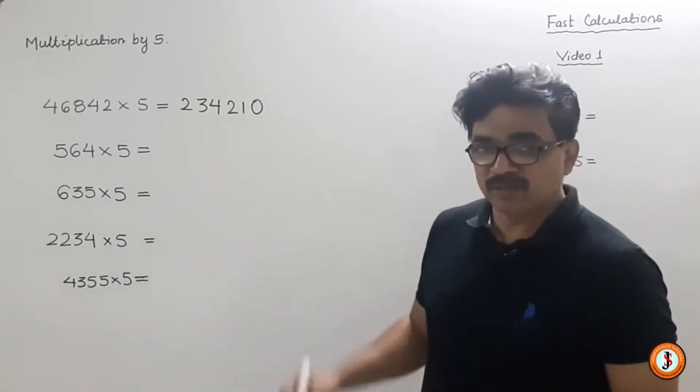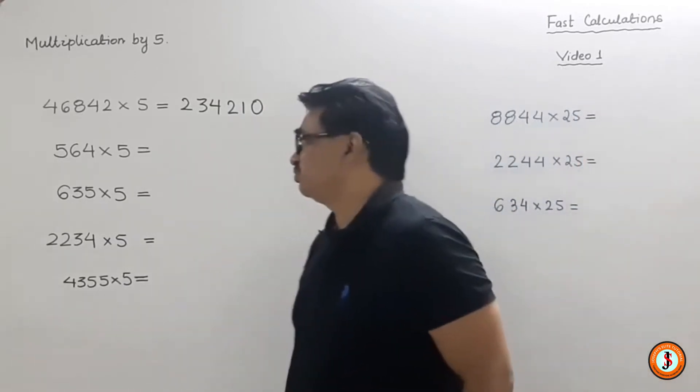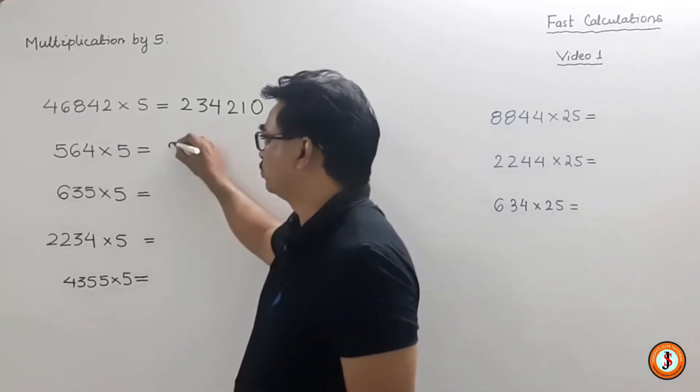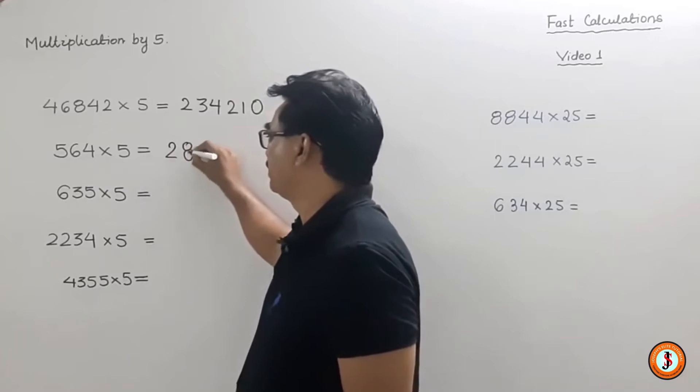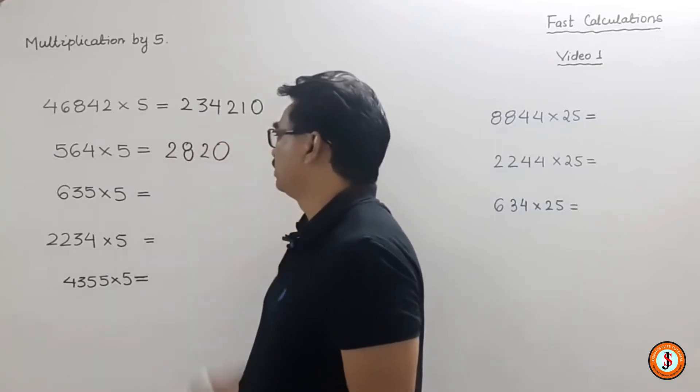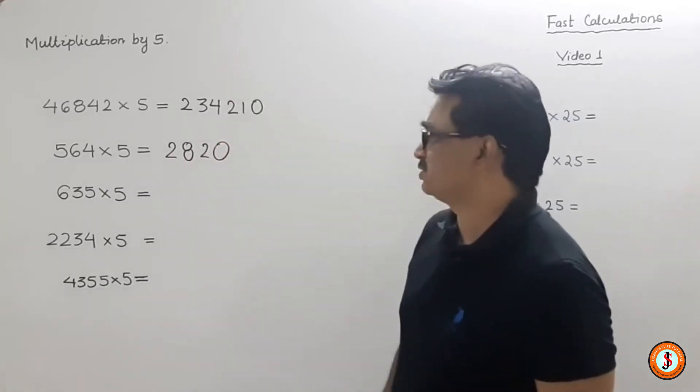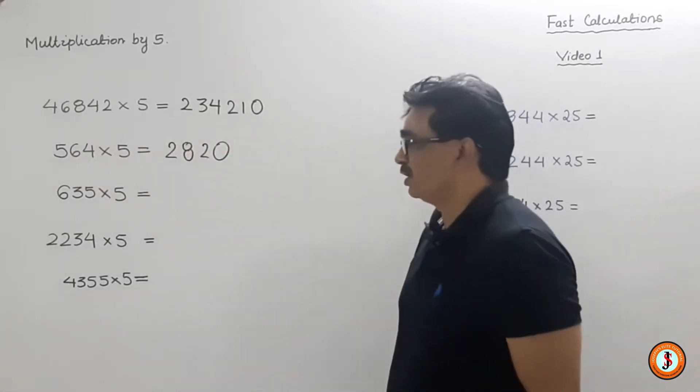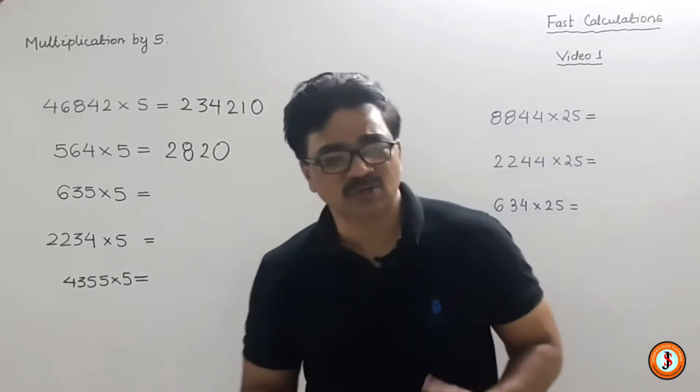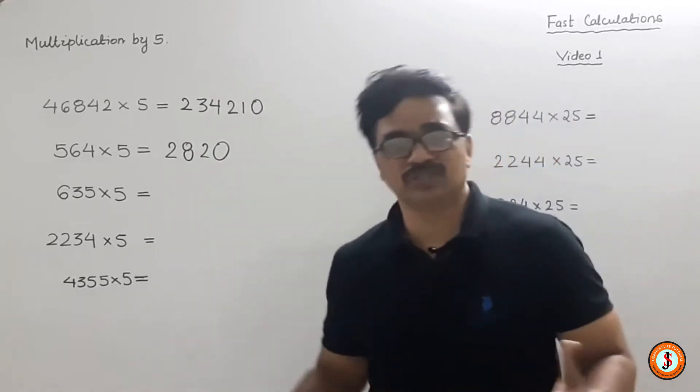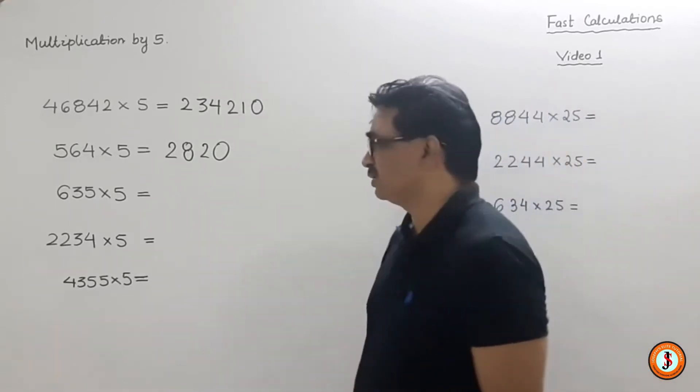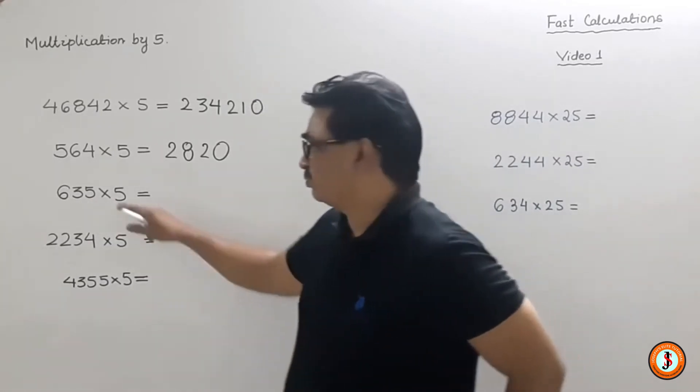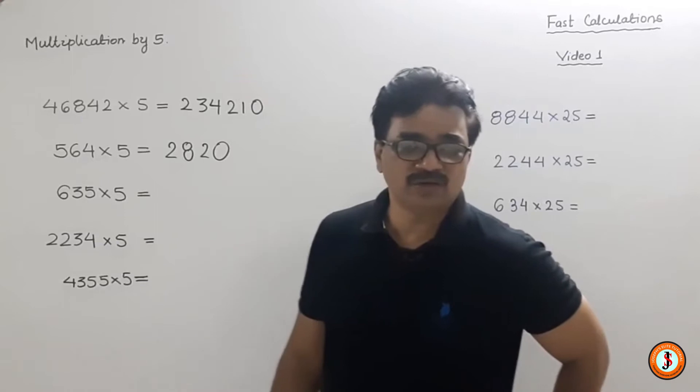564 × 5 = 2820. This will cancel out later. Then divide by 2. Now 635 × 5. This seems a little complicated - you think this shortcut may not work. But it's very simple. First, take 600 and halve it to get 300. Then instead of 35, take 34 and halve it to get 17.